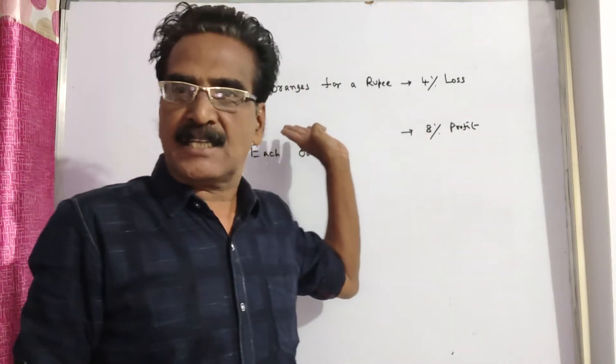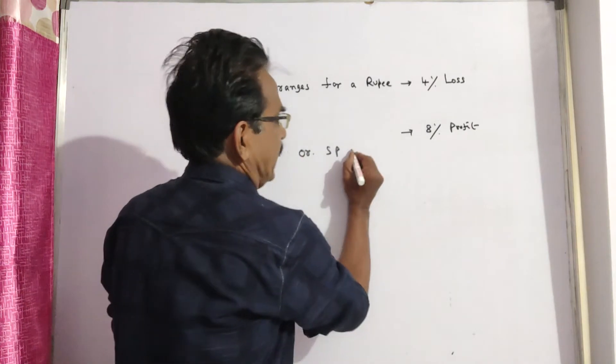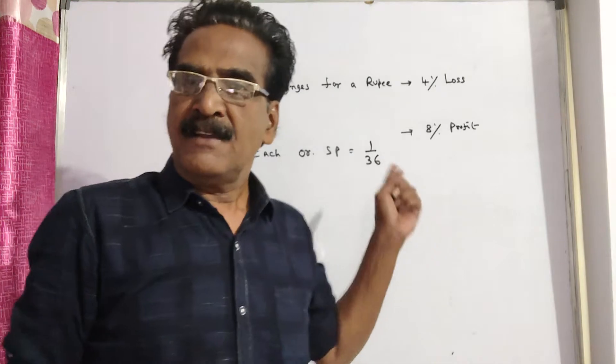He is selling 36 oranges for a rupee. It means each orange's selling price is 1 by 36.